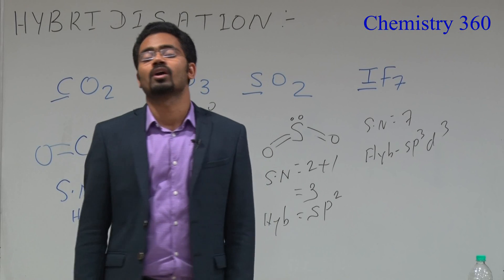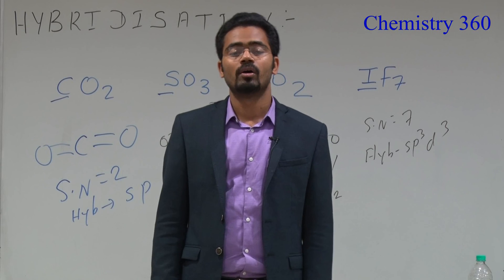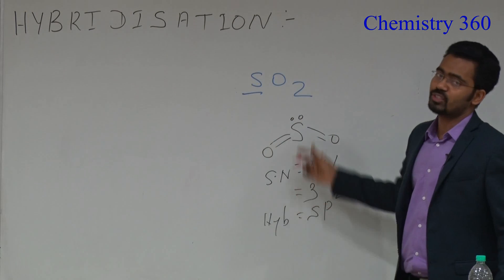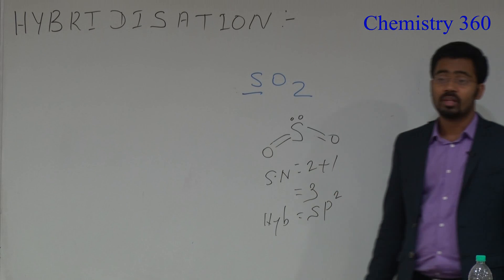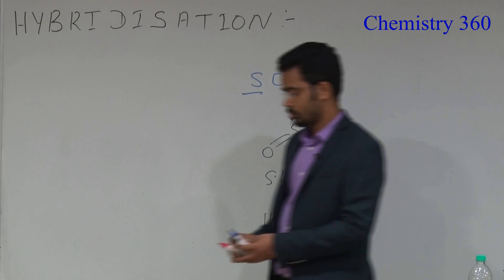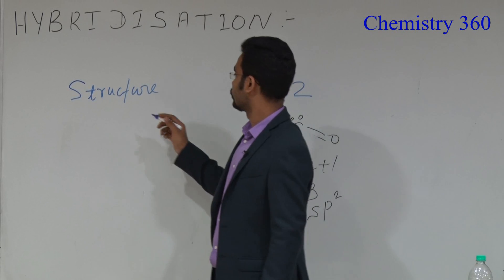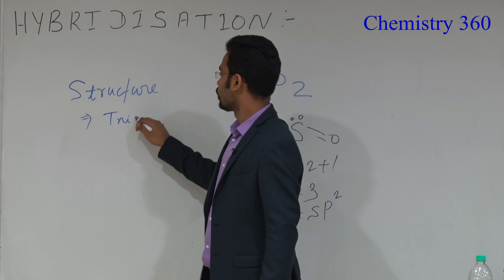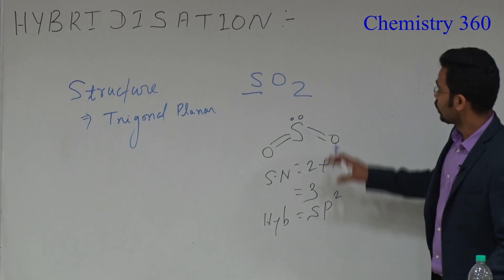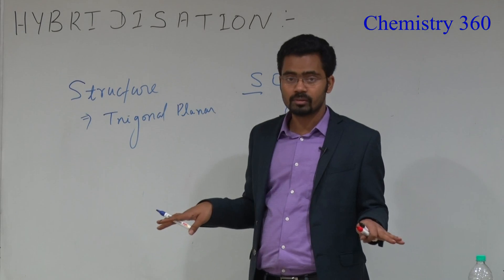To determine the structure, we consider the lone pair as a pseudo group. However, for determining shape, the lone pair is not considered as a group. In SO2, the hybridization is sp2. Therefore the structure is trigonal planar, because the lone pair is counted as a pseudo group — there are 3 groups arranged symmetrically.